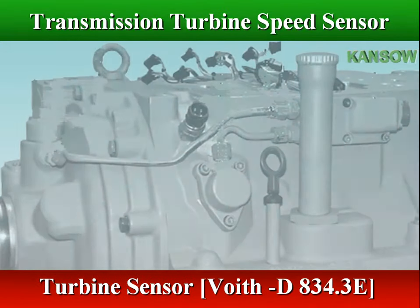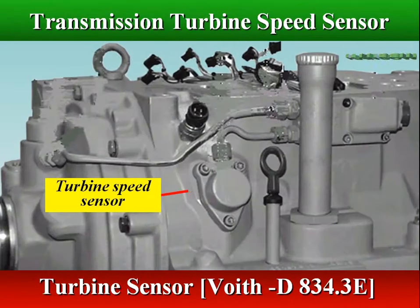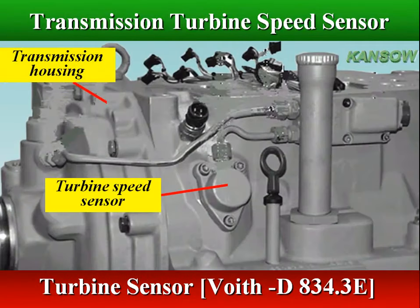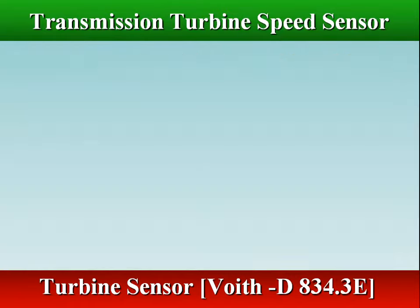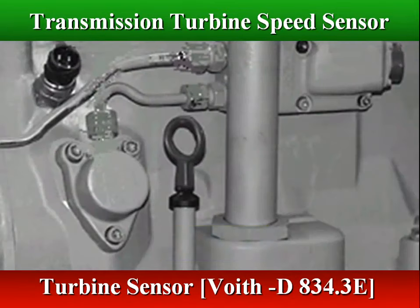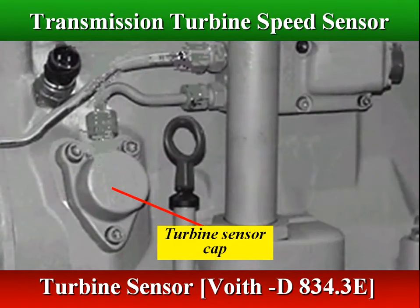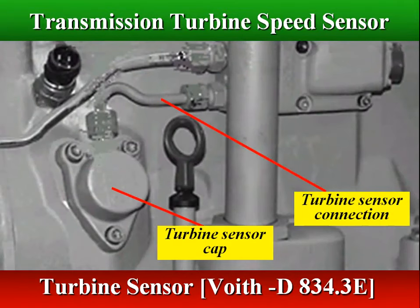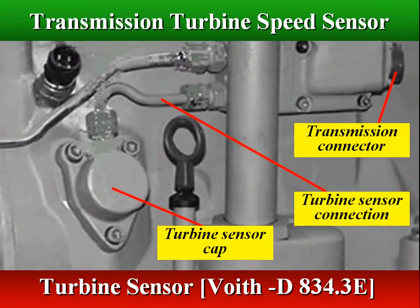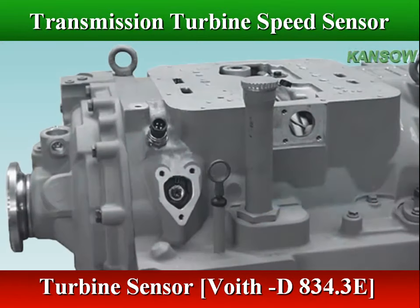In Voith-Diwa-3 transmissions, the turbine speed sensor is externally mounted through a hole in the transmission housing in the RGTB disc carrier and directed at the tone wheel attached to the turbine ring gear.